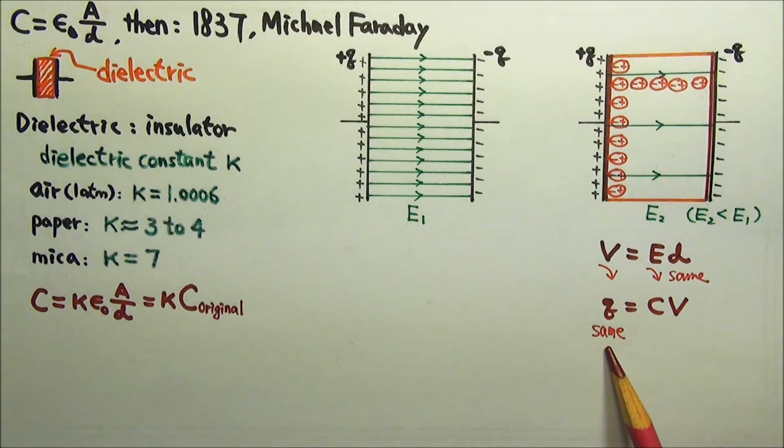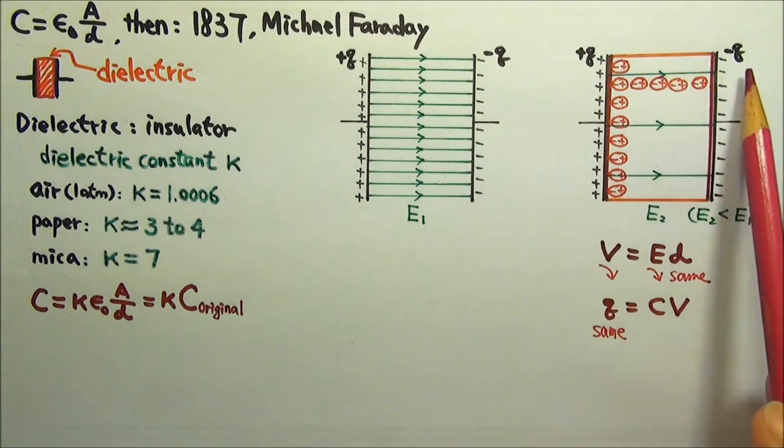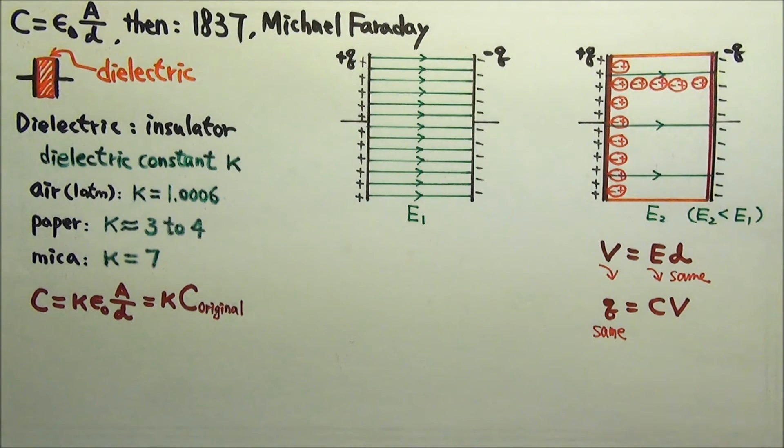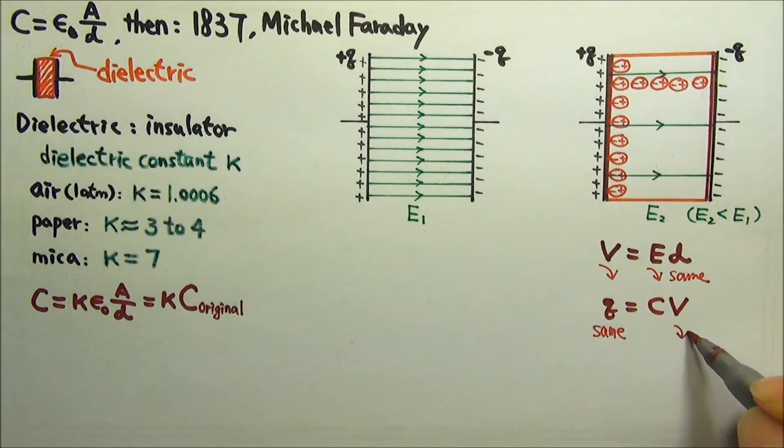Since Q equals to CV, for the same amount of charge stored on the capacitor's plates, the second set has a smaller voltage, which means its capacitance must be bigger.